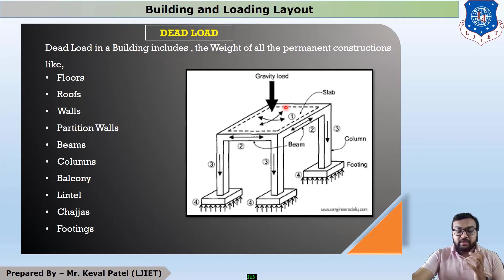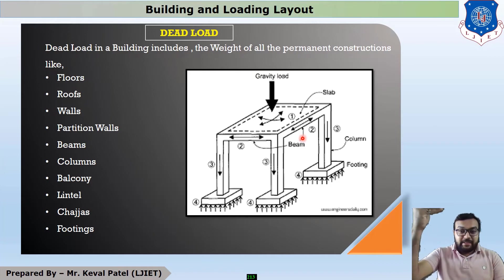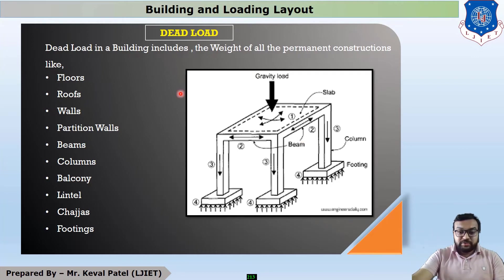In this figure it is clearly shown: number 1 is slab, number 2 is beam — meaning slab load goes to beam. Beam load is transferred to column, which is number 3. And last one is footing, given as number 4. This is the dead load.